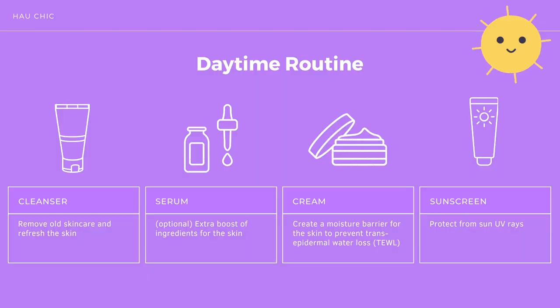Starting off with the daytime routine, you'll begin with a cleanser — this could be an active cleanser or just water depending on your skin type. Sometimes when my skin is excessively dry, I only use water in the morning. Then you have your serum, which is optional and is where the fun part of skincare begins. Then you want to protect your skin from moisture loss using a cream, which can hydrate the skin and also create a moisture barrier to prevent transepidermal water loss. After your cream, you apply sunscreen to protect from UV damage, which is the main contributor to many skincare problems such as ageing, hyperpigmentation, and dryness.